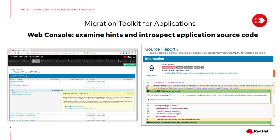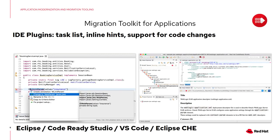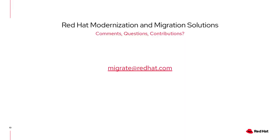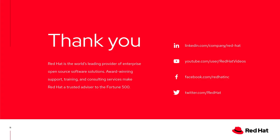Of course, you have hints on how to change the code. You can introspect into the application source code, get hints, and get connections to documentation, so you could make the best change for your own code and make your application suitable for containers. And in the IDE plugins, same thing — inline hints and support for code changes that you could review just when you are developing. Migration Toolkit for Applications is here to help you modernize your applications, bring them to a more modern shape, if possible in containers, if possible on OpenShift, making them more suitable for the modern days of digital transformation. If you have any questions or comments, please do not hesitate to send them to migrate@redhat.com. Thank you very much.